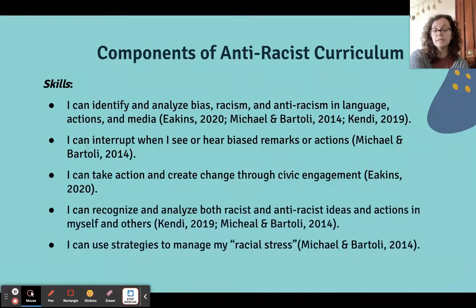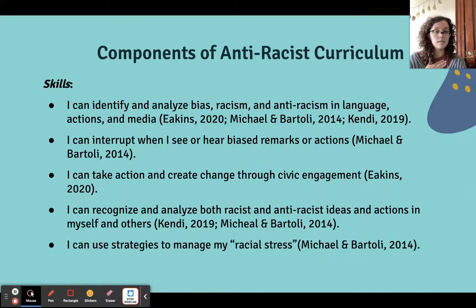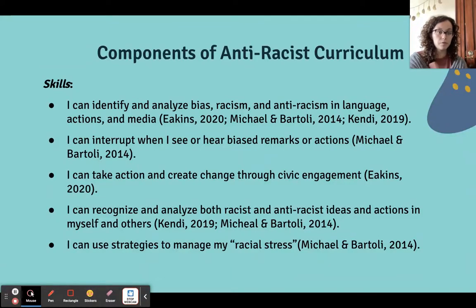In terms of skills, students needed to be able to identify and analyze racism and anti-racism in language, actions, and media; interrupt when they see or hear biased remarks or actions; take action and create change through civic engagement; and recognize and analyze both racist and anti-racist ideas in themselves and in others. That self-reflection and acknowledgement that racism isn't always in some far-off bad guy — it's also found within ourselves. Finally, they needed strategies to manage their racial stress: how can they manage feelings of discomfort or strong emotions that might prevent them from hearing what people are saying, which might pop up as fragility or defensiveness.